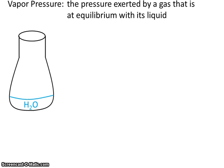Vapor pressure: the pressure exerted by a gas that is at equilibrium with its liquid. So let's draw what that might look like. Here's a flask, and in the flask we have water. Now you know that over time, the liquid water would begin to evaporate. As the liquid water evaporates, it enters the vapor or gas phase.